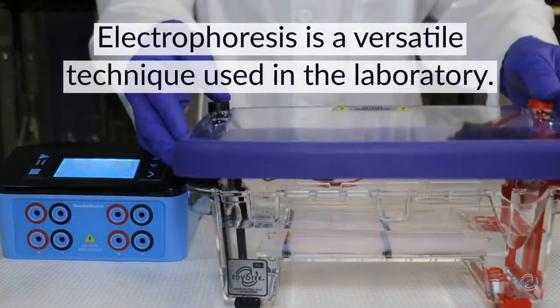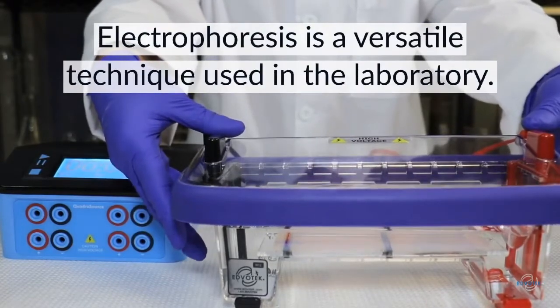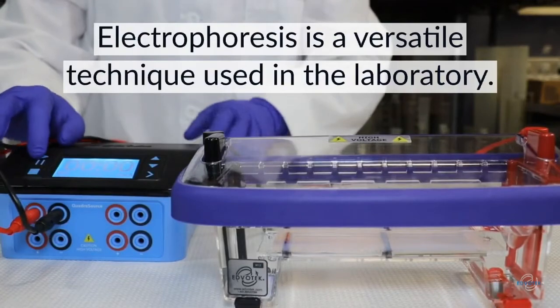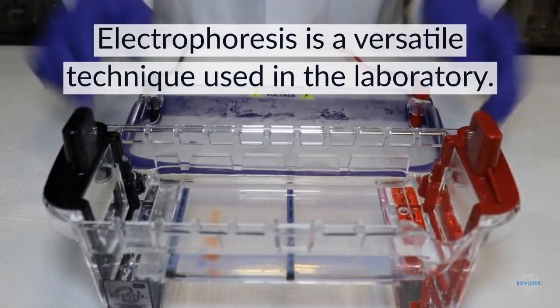Electrophoresis is a versatile technique. It can be used to separate dyes, proteins, and nucleic acids like DNA and RNA. Because of its ease of use and its ability to separate molecules, electrophoresis has become one of the most common techniques used in the research lab, but there are ways to mess up your experiment.